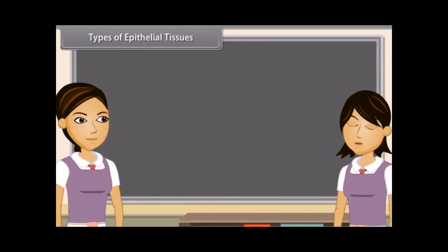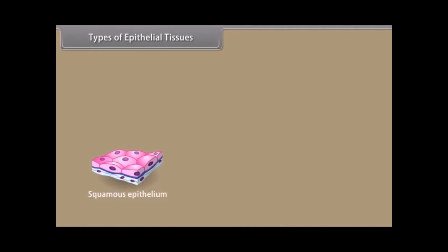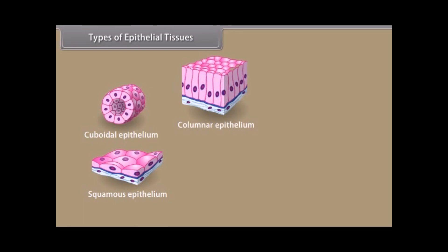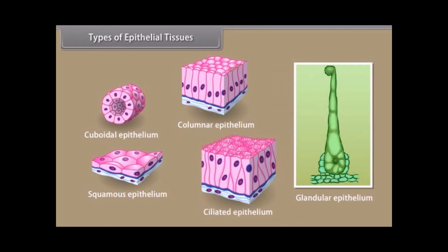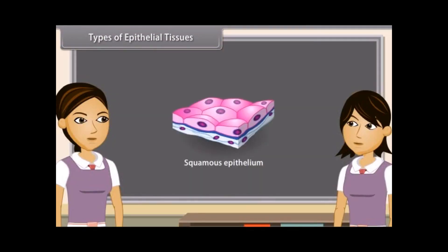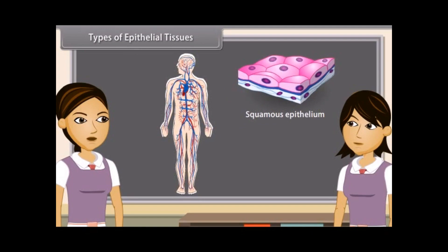Epithelial tissues are classified into five types on the basis of functions and shape of the cells: Squamous Epithelium, Cuboidal Epithelium, Columnar Epithelium, Glandular Epithelium, and Ciliated Epithelium. Squamous Epithelium is made up of thin, flat, irregular shaped cells which fit together like floor tiles to form a compact tissue. It is found in lining of cavities and blood vessels and covering of tongue and skin. It is also known as pavement epithelium.